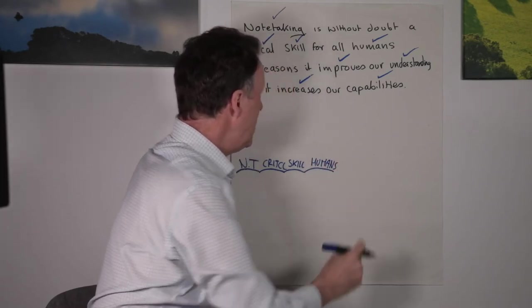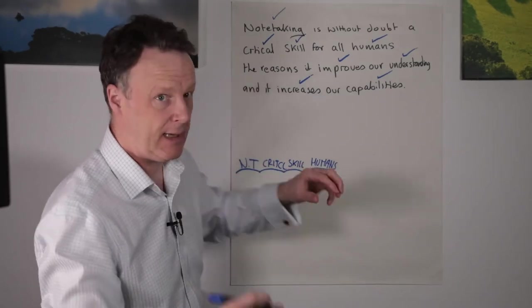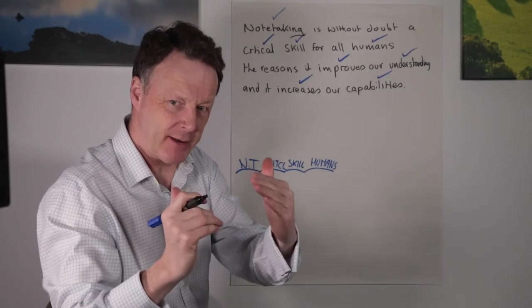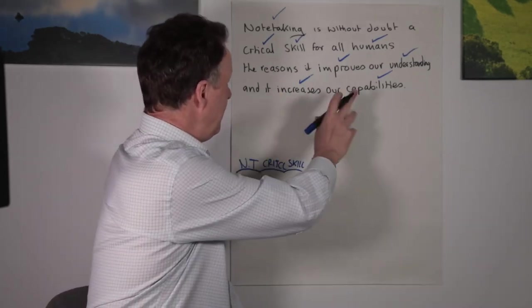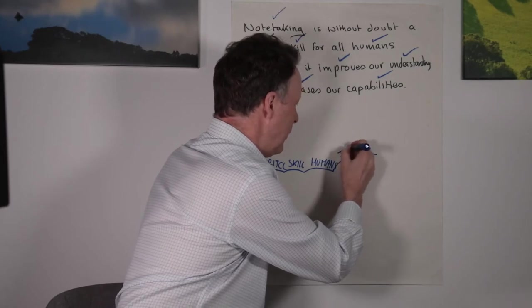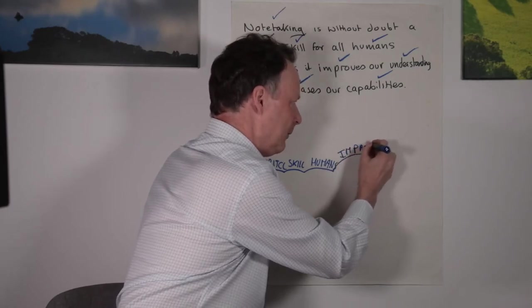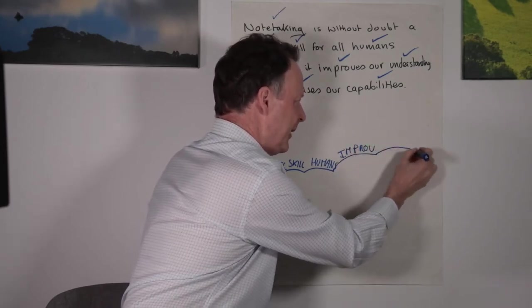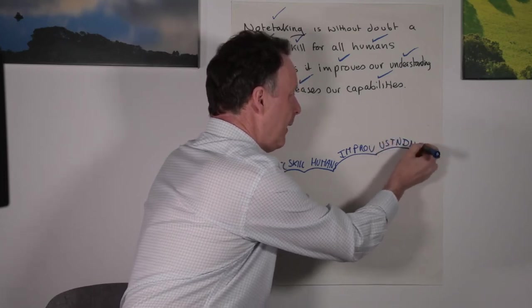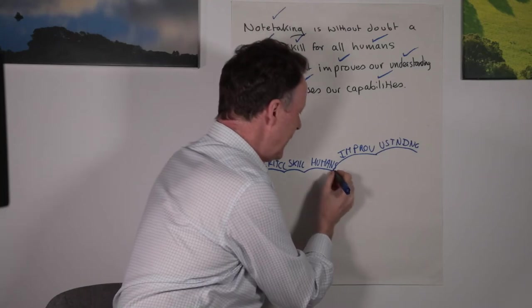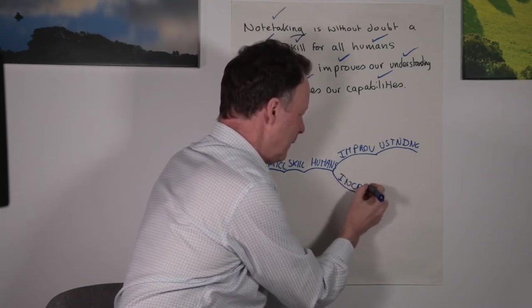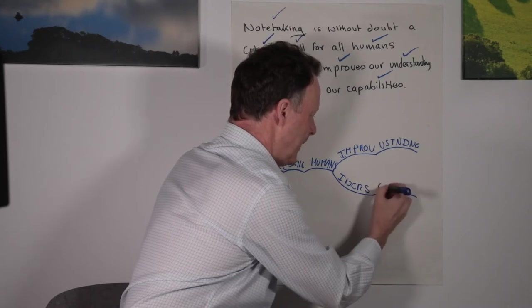And this is what I do in reality. So note-taking. It's a critical skill for humans. Now the word and is a magical word, because as soon as I hit and or or, I know I'm going to start chunking information. So humans. It improves understanding, which sounds sort of important, but is actually crucial. And it increases our capabilities. Okay, capabilities.